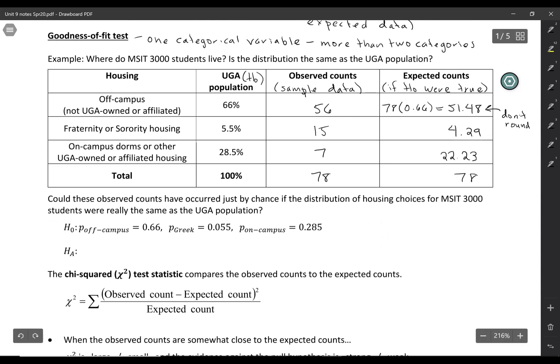So the null hypothesis is that these proportions are all really the same as what it is for all of UGA. So we could say MSIT the same as UGA population. That would be our null hypothesis. And then the alternative, it's not that they're all different. It's just that at least one of these proportions is different from the values given. So in other words, that the MSIT distribution is different than the UGA population.